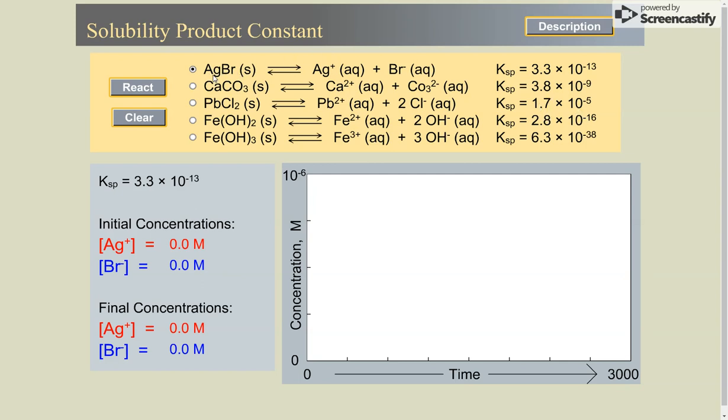So if I look at the first one, the silver bromide and calcium carbonate, look at the different values, which one is bigger, which one will dissolve more. So let's try it out. We're going to react. Notice that in the beginning, we didn't have any silver ions or bromide ions in solution.